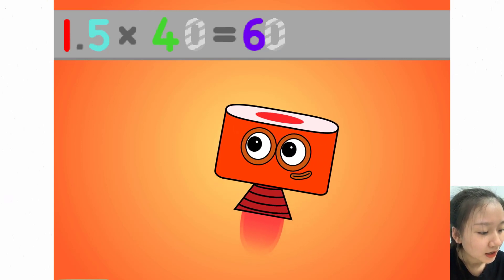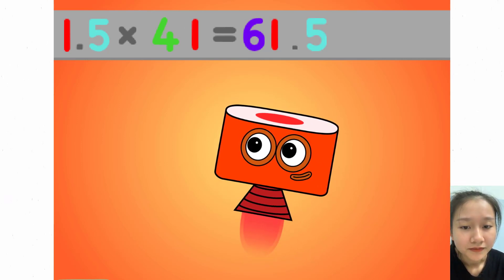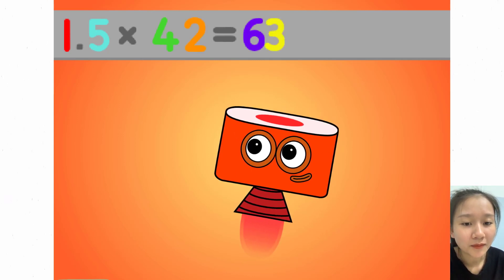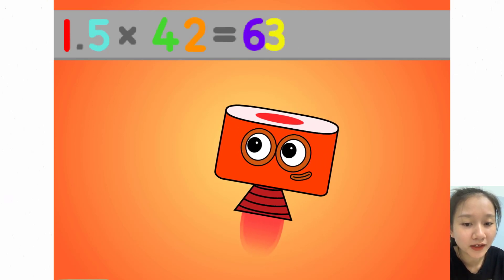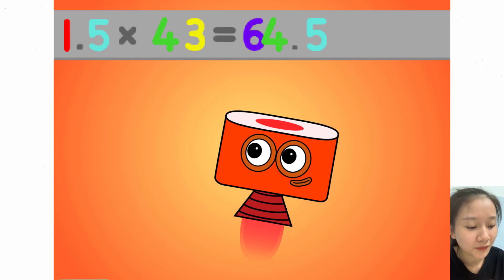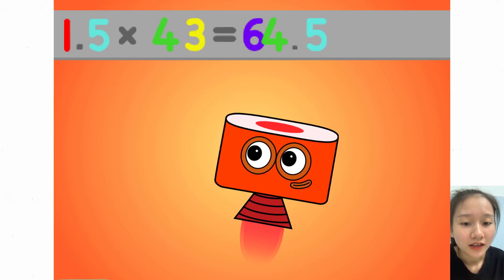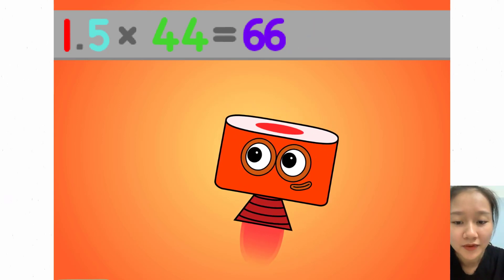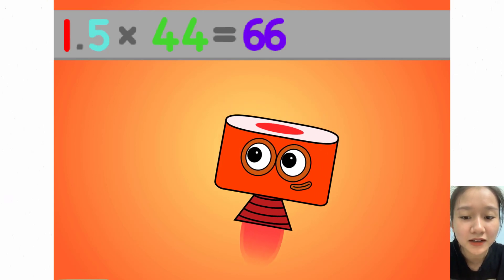1.5 times 41 equals 61.5. 1.5 times 42 equals 63. 1.5 times 43 equals 64.5. 1.5 times 44 equals 66.